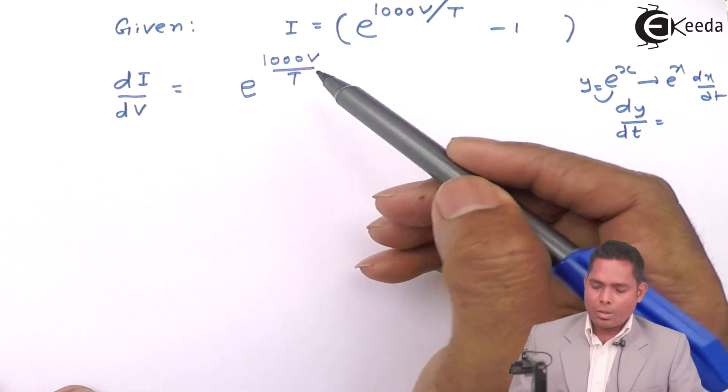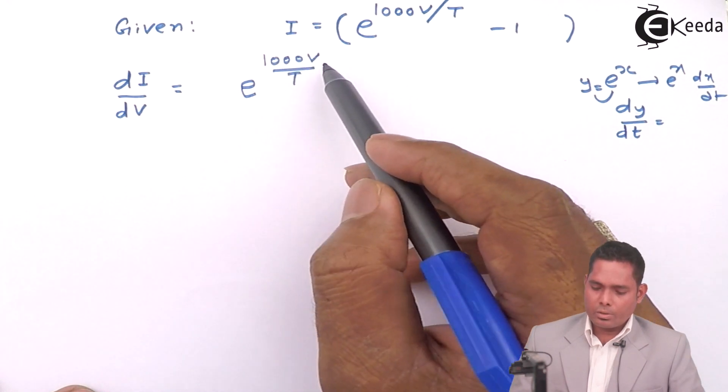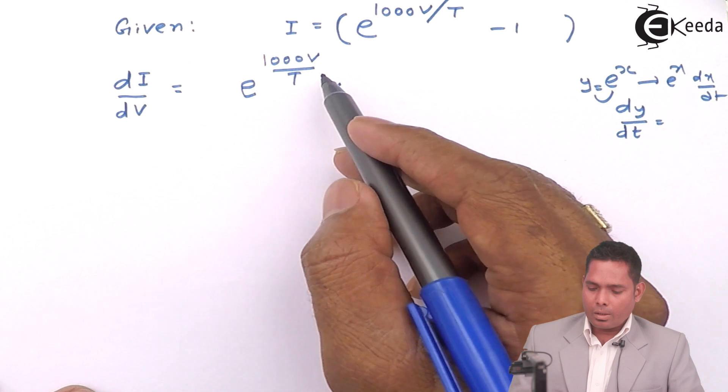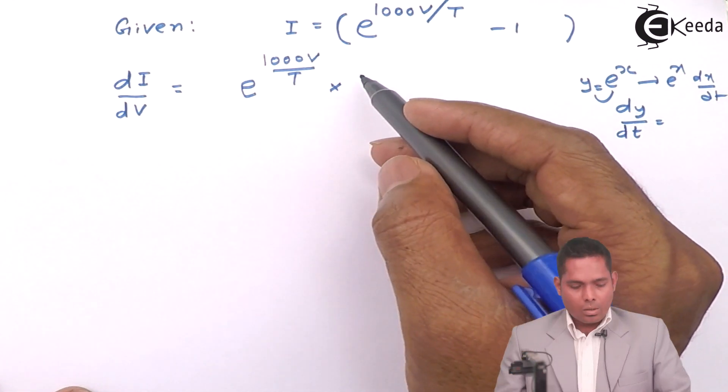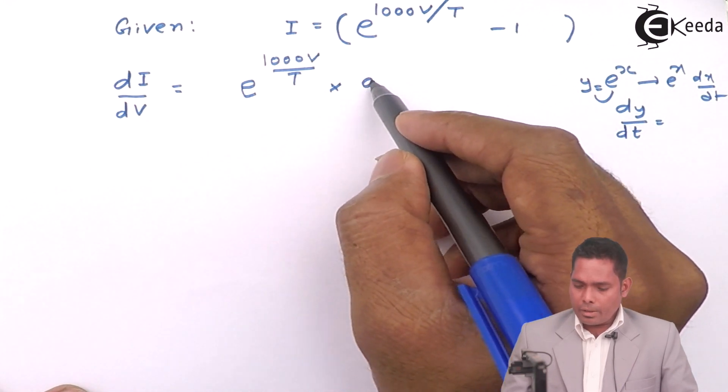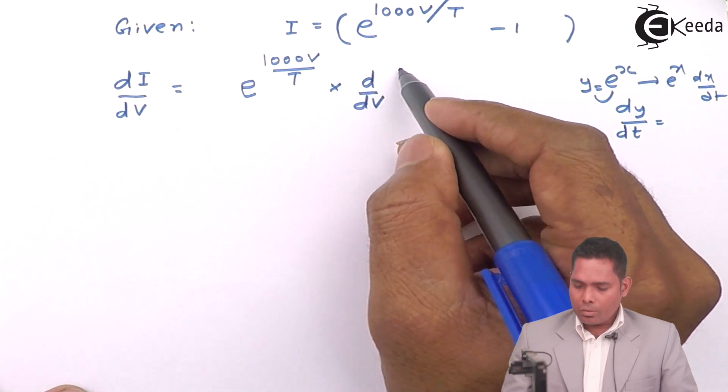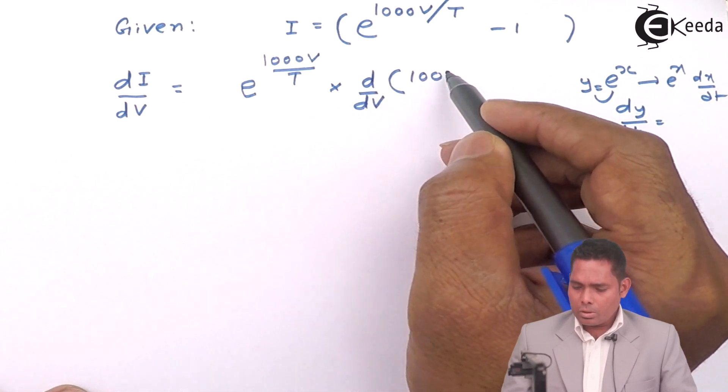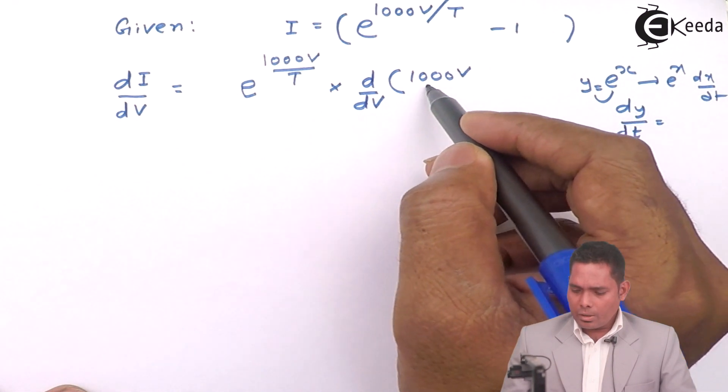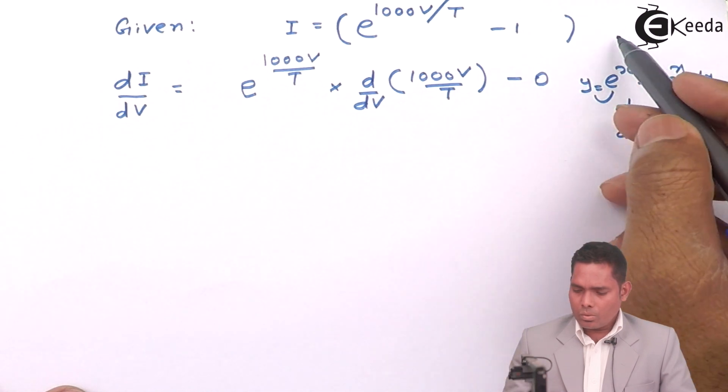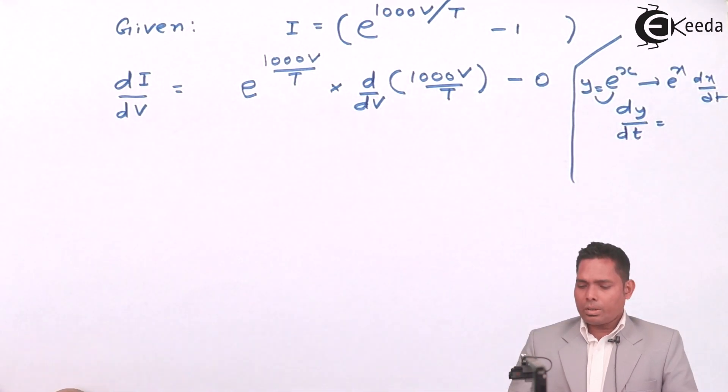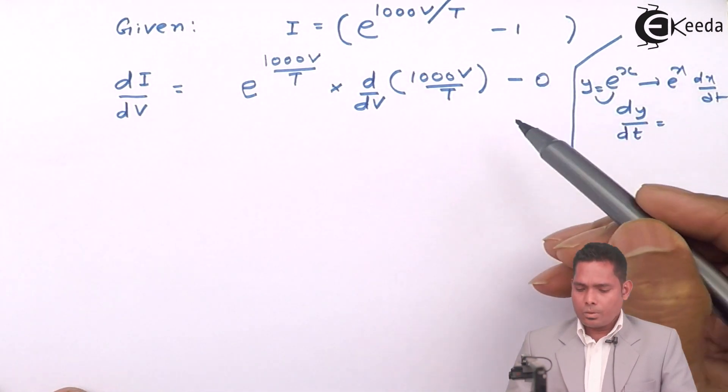So dI/dV equals e raised to 1000V/T times derivative of 1000V/T minus 0. The derivative of 1 is 0. If I differentiate, 1000 by T is a constant, so that is taken out, only differentiate V which is 1.